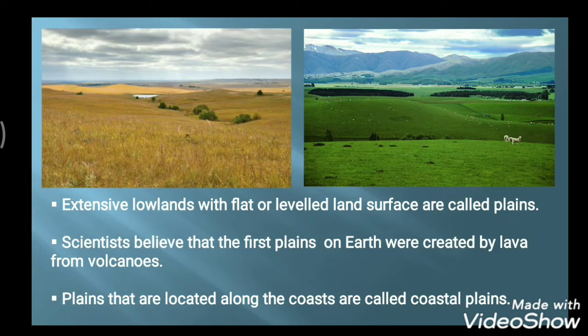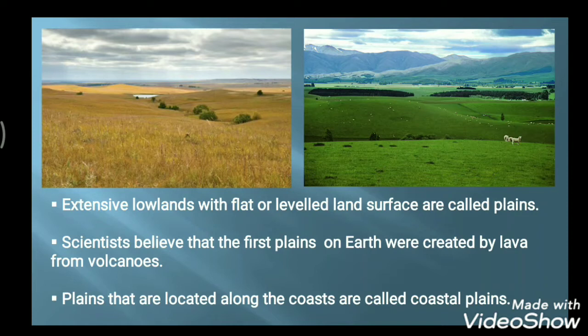Plains are basically flat and level lands, unlike mountains and plateaus. Scientists believe that the first plains on the earth were created by lava from volcanoes — the lava pushed up through the surface of the earth and made some areas flat. Other plains have been formed by erosion, which occurs when air, ice, or water wears away at land. Erosion can turn hilly land into flat lands. Plains located along the coastal sides are called coastal plains.